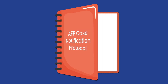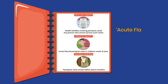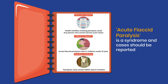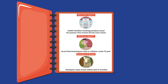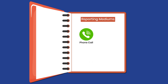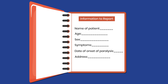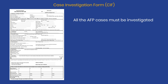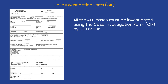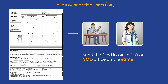All health facilities treating cases of paralysis, or any person who comes across such cases, should report cases having paralysis onset within the last 6 months. Acute flaccid paralysis is a syndrome and cases should be reported irrespective of the clinical diagnosis. Immediately report AFP cases to DIO and SMO by fastest means like phone call, WhatsApp, email, or SMS. Information required includes the patient's name, age, sex, symptoms, date of onset of paralysis, address, and mobile number. All AFP cases must be investigated using the Case Investigation Form (CIF) by DIO or surveillance nodal officers within 48 hours of case notification. Send the filled CIF to the DIO or SMO office on the same day.